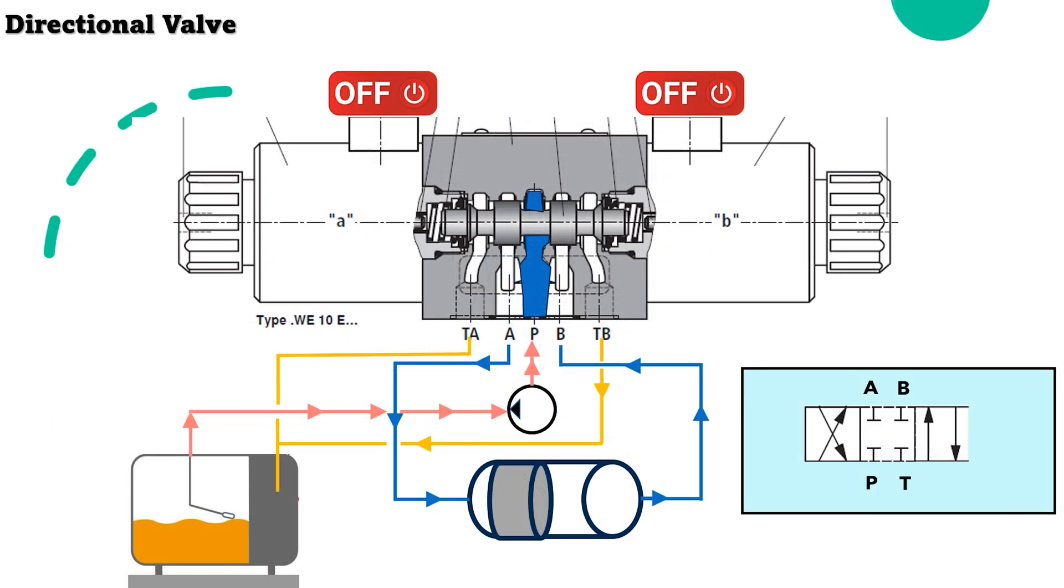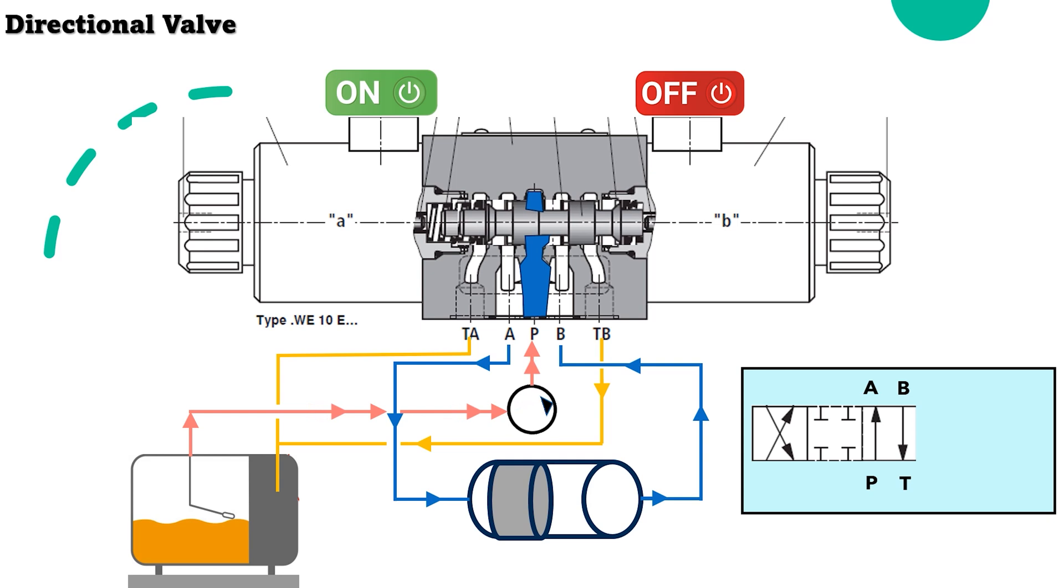When solenoid A is energized, the spool will move to the right direction. The path will open from P to A.